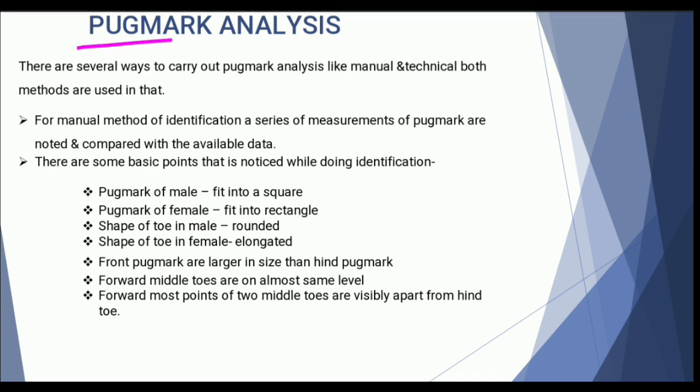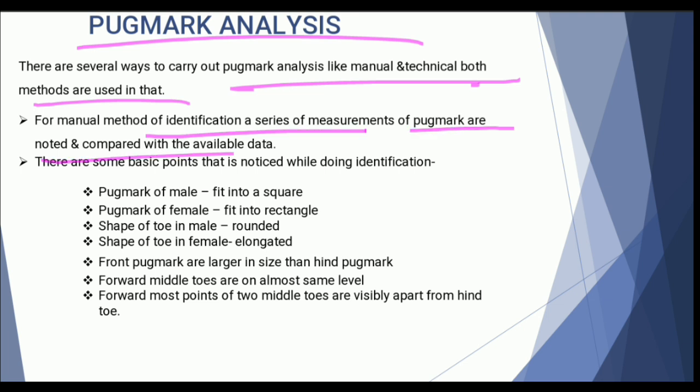Pug mark analysis involves certain steps to identify the animal to which the pug mark probably belongs. Several ways exist to carry out this analysis. Technology has proved a boon in forensic science, and different machines and technologies are used to determine the nature and origin of the pug mark. For manual identification, measurements are taken and notes are made with minimal machine involvement.